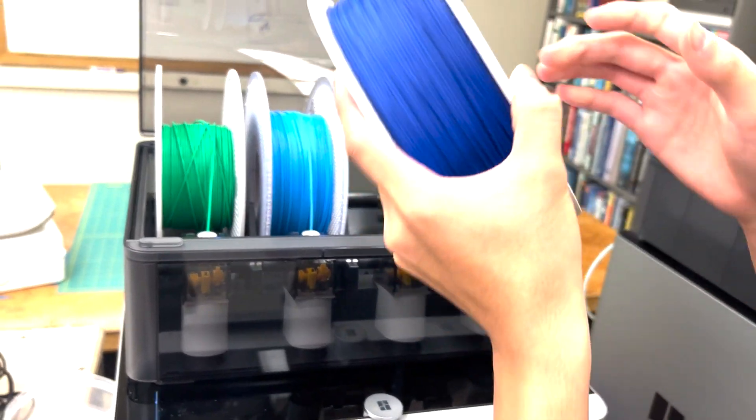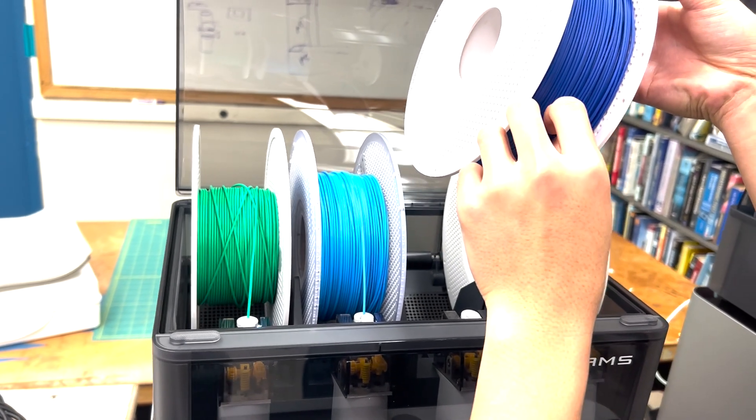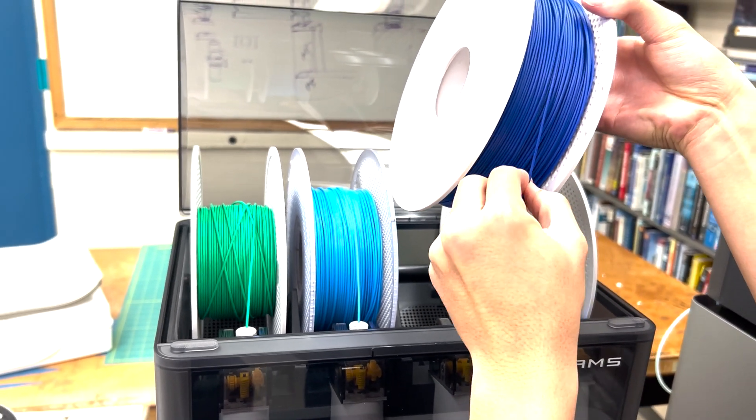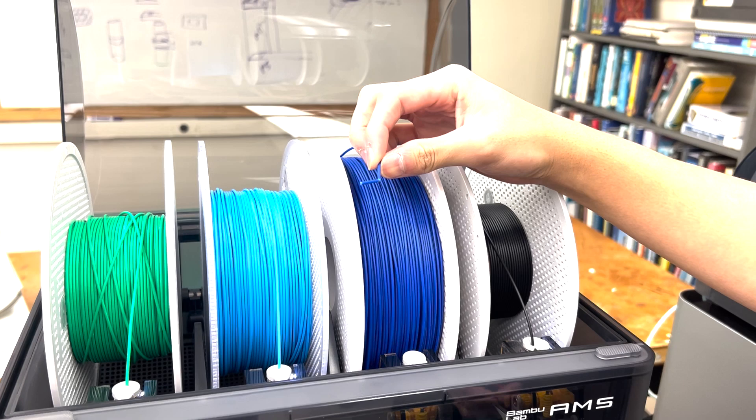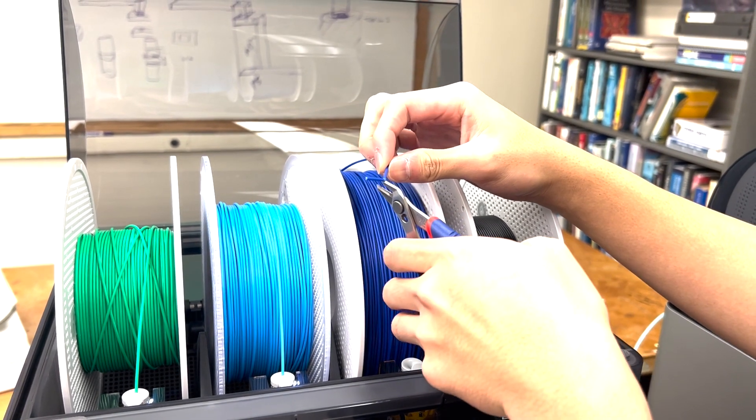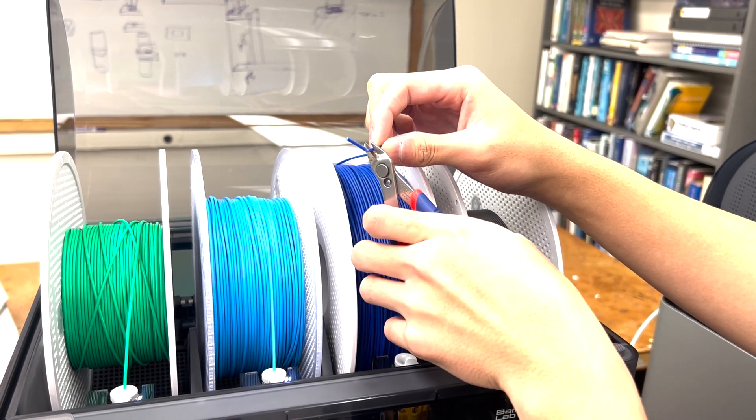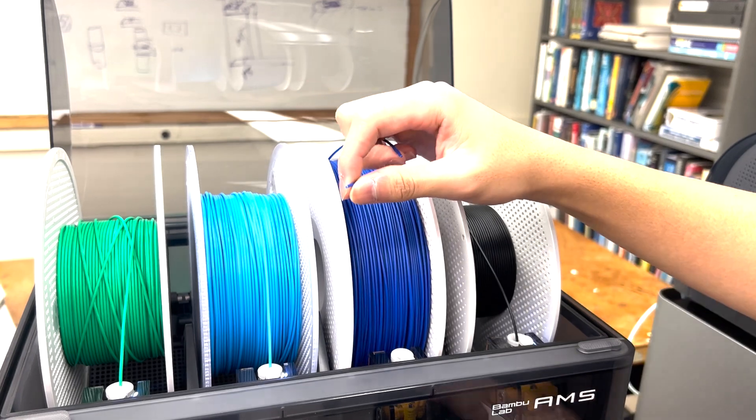And then you'll put your filament inside. And then you want to cut off the bent piece, throw it away.